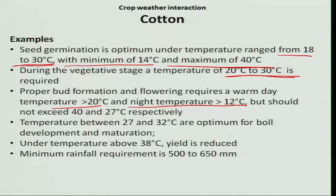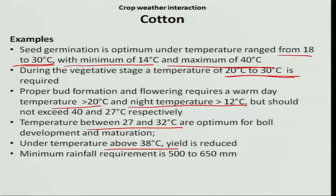The temperature requirement during boll development and maturation is around 27 to 32 degree Celsius. Under temperatures above 38 degree Celsius, the yield is reduced. The minimum rainfall requirement for cotton is 500 to 650 mm.